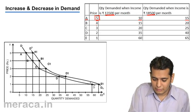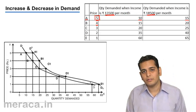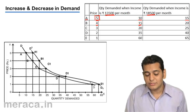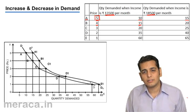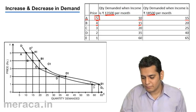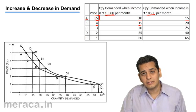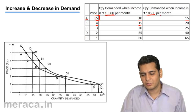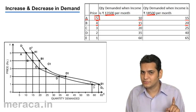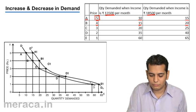Again, when the price falls to Rs. 4, we consume 15 units at our income level of Rs. 13,500. And when our income rises to Rs. 18,500, we consume 20 units at the same price of Rs. 4.